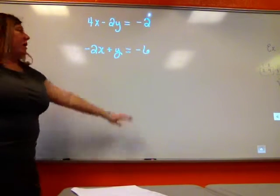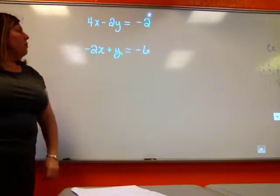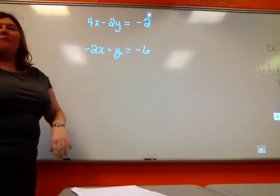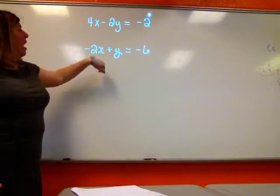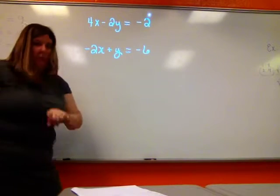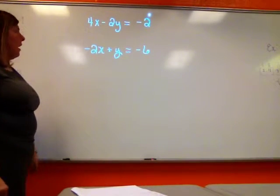I've got 4x minus 2y equals negative 2, and negative 2x plus y equals negative 6. I've got to pick one of my equations, solve for one of my variables, and then I can substitute.